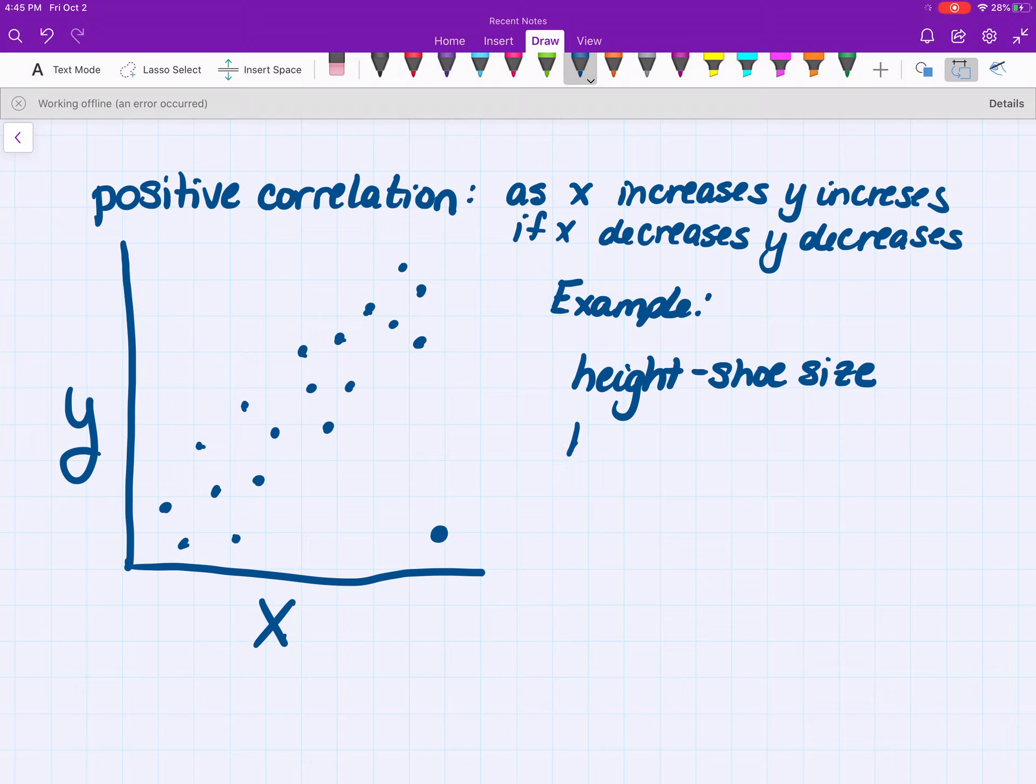Hours worked. This is a causation. The more hours you work causes your pay to go up. There is a causation there. If you're working more hours and you're getting less pay, something's wrong in the job. Try to think of some other things that have positive correlations.